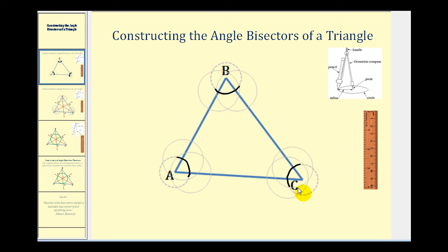You can leave the compass the same or change the radius — I've actually increased the radius a little bit. Now we're going to put the point of the compass at each intersection of the arc and the sides of the triangle, and swing another arc in the interior of each angle. So if we put the point of the compass here and swing an arc in the interior of the angle, it might look something like this.